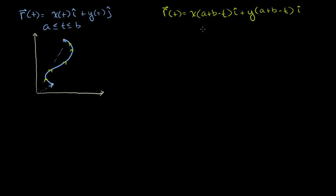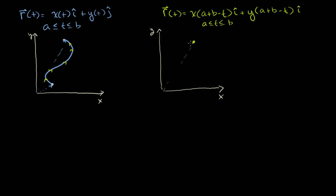We've seen this in the last two videos. The path defined by this reverse position vector function is going to look just like the original, but instead of starting here and going there, this is also true for a ≤ t ≤ b. So t still goes from a to b, but when t equals a, you substitute and get the endpoint vector. As you increment t, you trace out that same path but in the opposite direction.